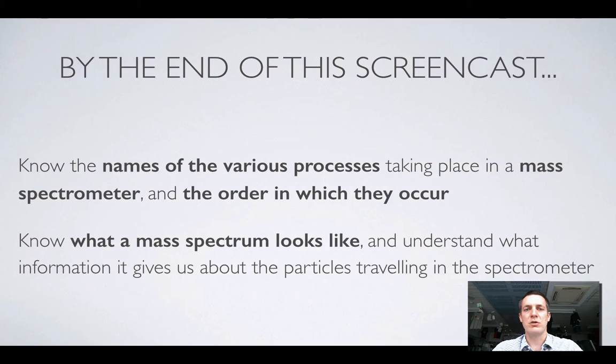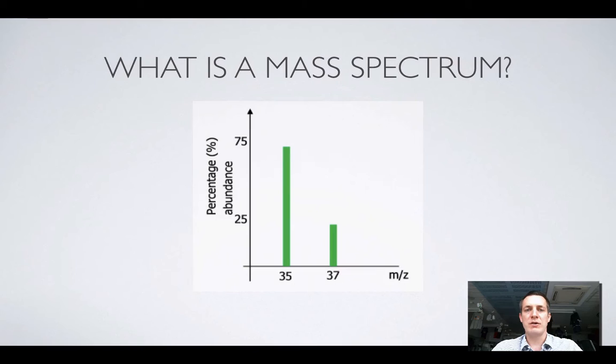So by the end of this film, hopefully you'll know the names of the processes that take place in the spectrometer, and what order they happen in, and also you'll know what a mass spectrum looks like, that is the output from one of these machines, and what it tells us about the particles that went through this machine.